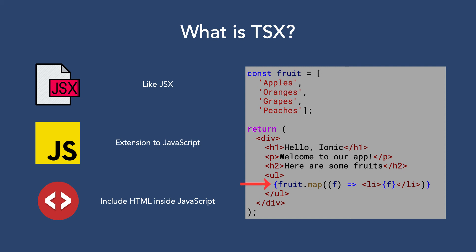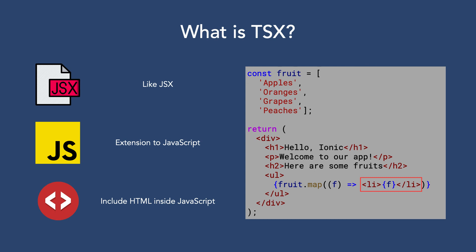Notice the curly braces surrounding the call to fruit.map. That's an indication to TSX that we're going to run some code here. Think of it essentially as a replacement function. At this point inside the UL, this block is going to get replaced with the execution of what's inside it. The same thing happens inside of the li — rather than display a constant value, we're going to evaluate the value of F and replace that curly brace expression with the value at that point.